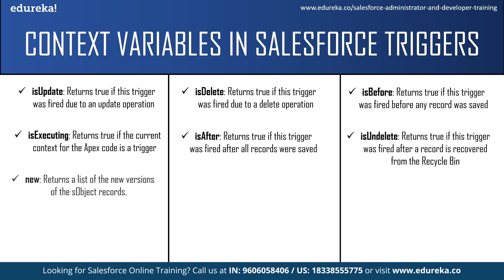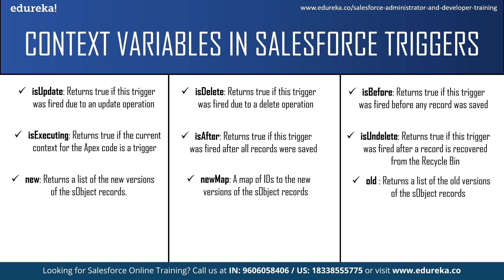isUndelete returns true if the trigger was fired after a record was recovered from the recycle bin. The new context variable returns a list of new versions of the Salesforce object records — available in insert, update, and undelete triggers, and records can only be modified in before triggers. newMap is a map of IDs to the new version of the Salesforce object records, available in before update, after insert, after update, and after undelete triggers. old returns a list of old versions of the Salesforce object records — available in update and delete triggers. oldMap is a map of IDs to the old version of the records, also available in update and delete triggers.